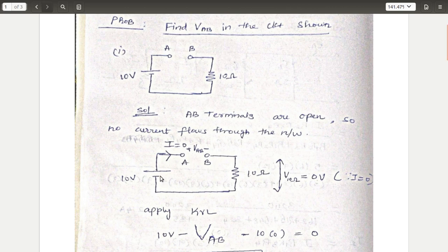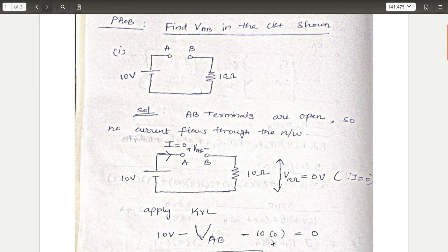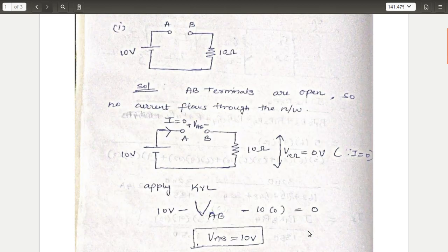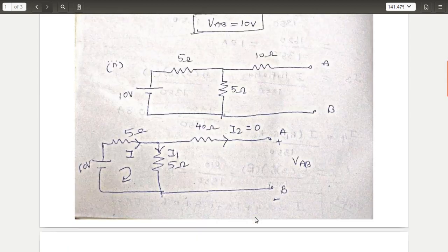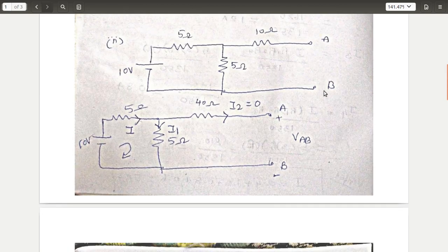Now apply KVL to find the voltage across terminal A and B. I am travelling clockwise, taking potential drop to rise. So: 10V (potential rise) − VAB − 10 × I = 0. Since I = 0, simplifying gives VAB = 10 volts.